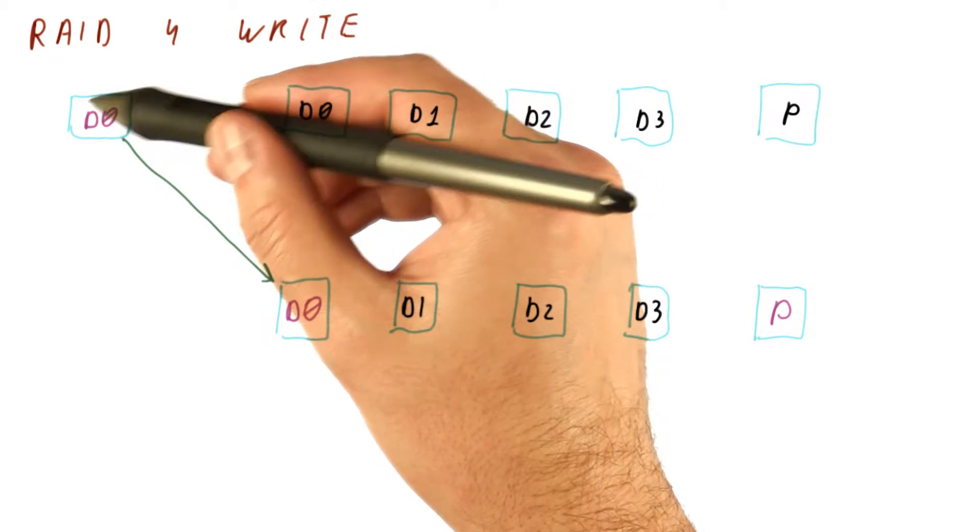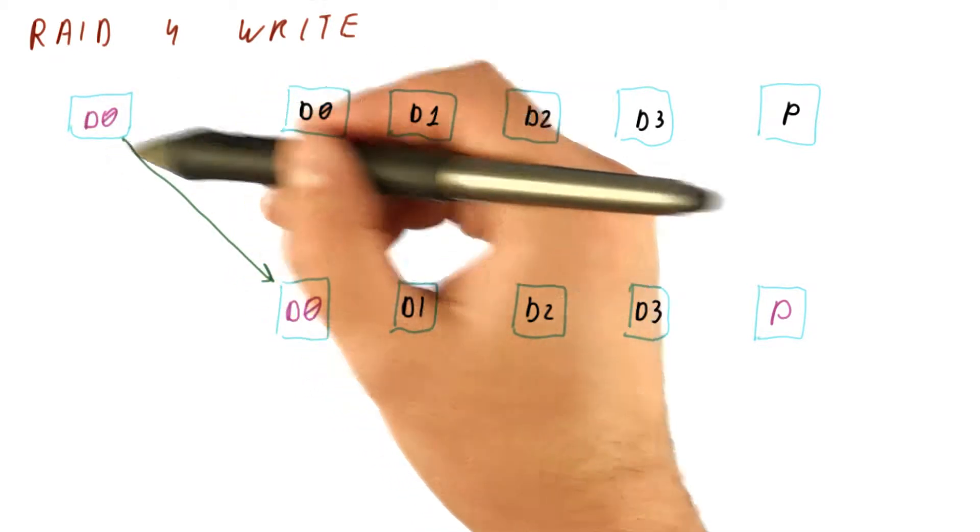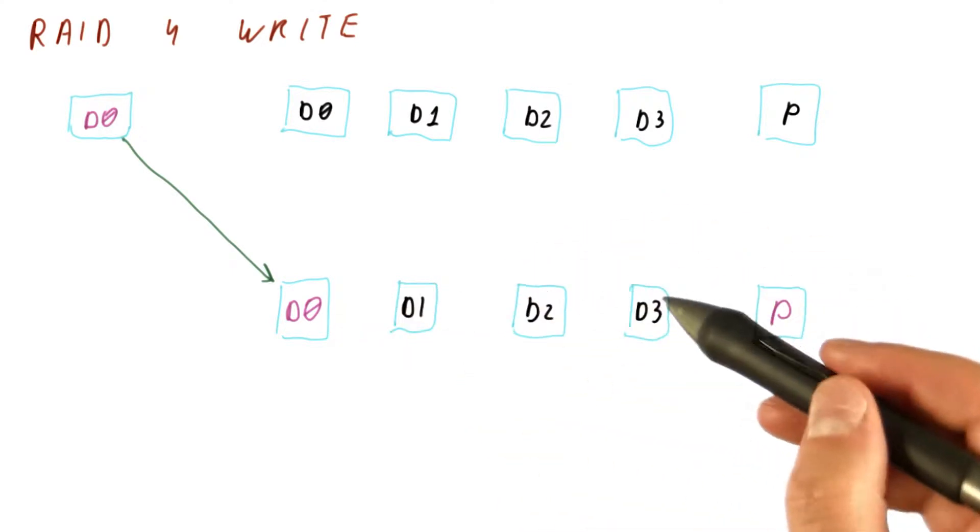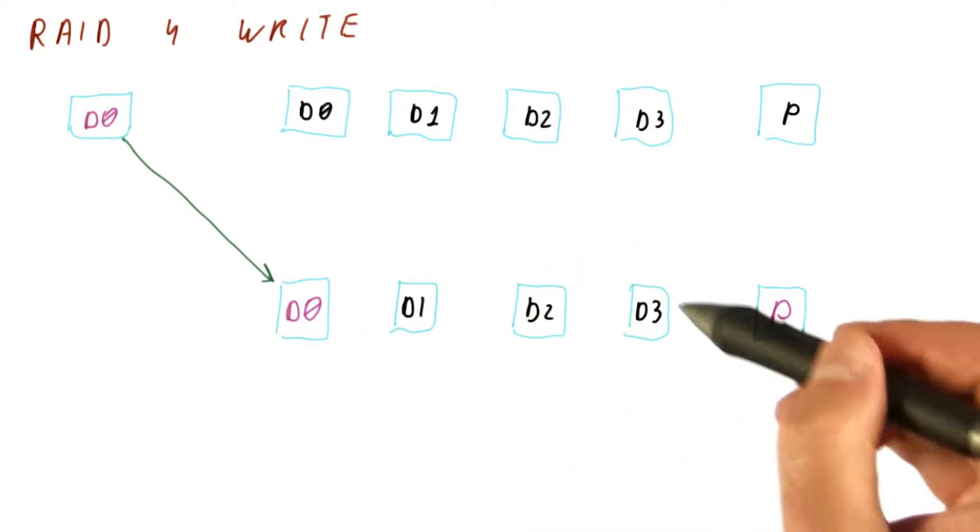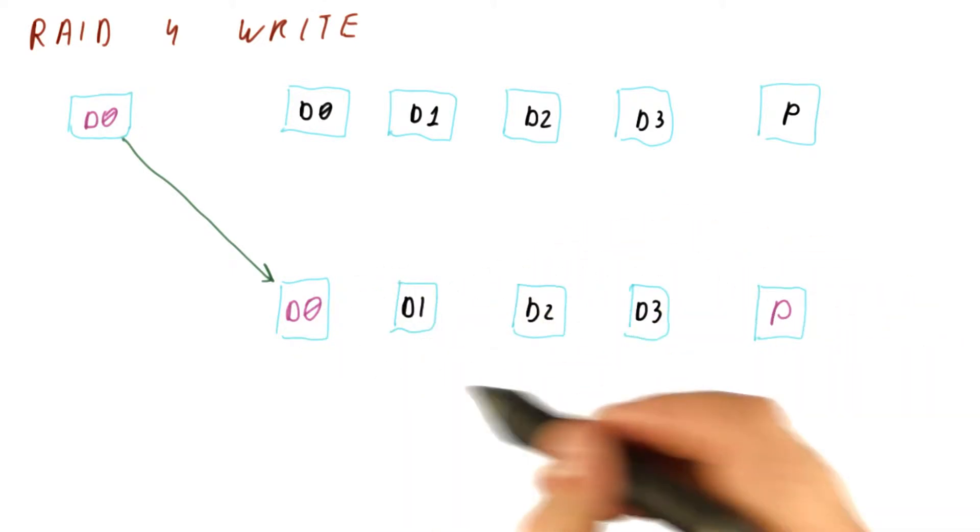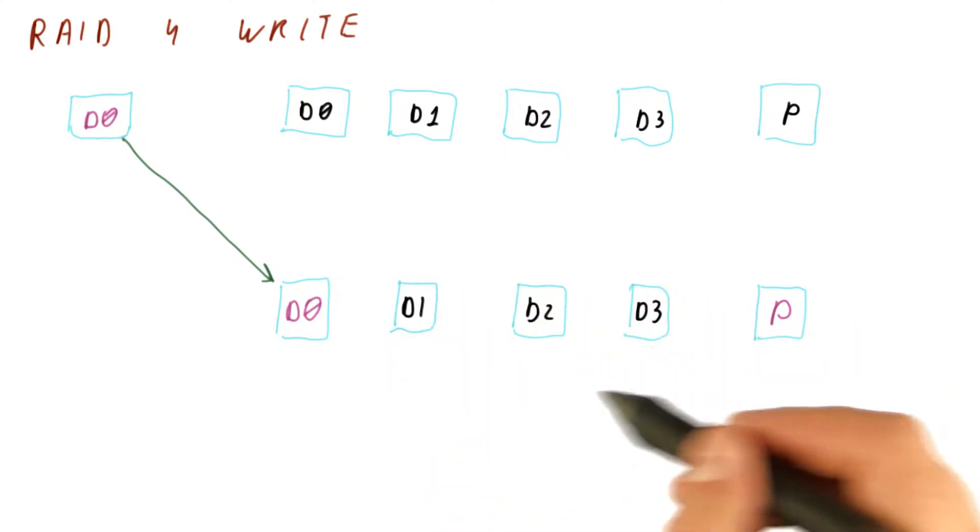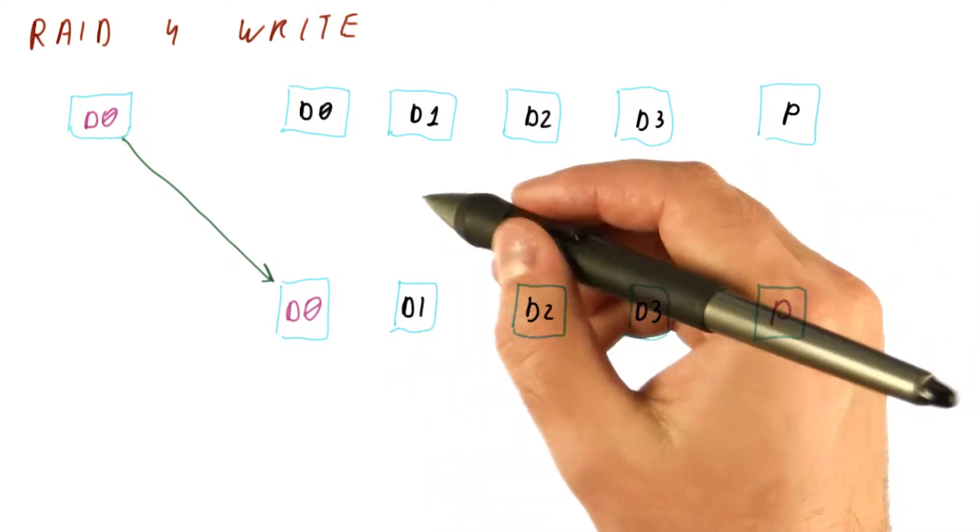And XOR that with the new content for the fourth disk. But that would result in three reads and a write. If n is even larger, that would increase the number of reads we need to do the write.